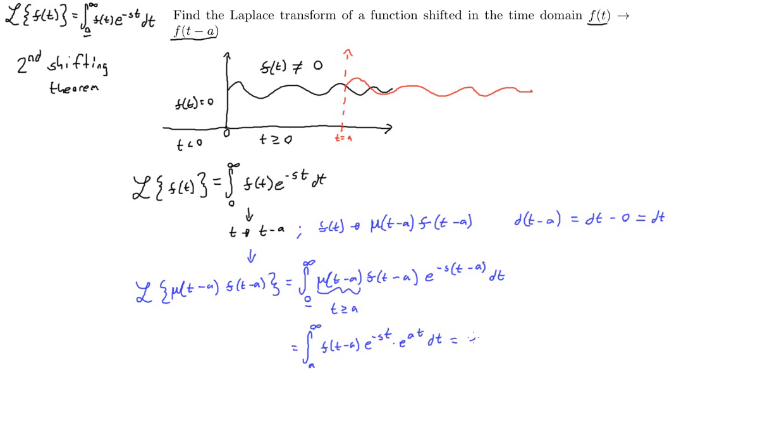At this point what we want to do now is we're going to factor out this e. And no, this should be s right here. I'm sorry, I messed up a little bit. That should be an s right there. That t that I just erased should be an s. So it'll be e to the as times the integral from a to infinity of f(t - a)e to the minus st dt.